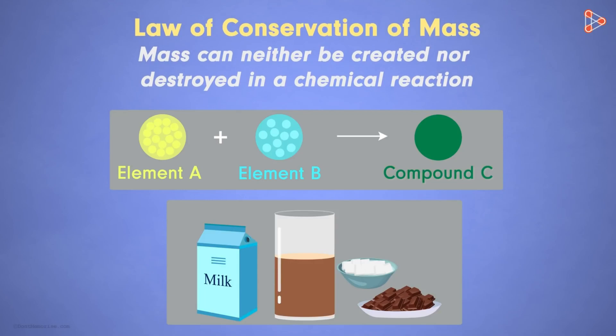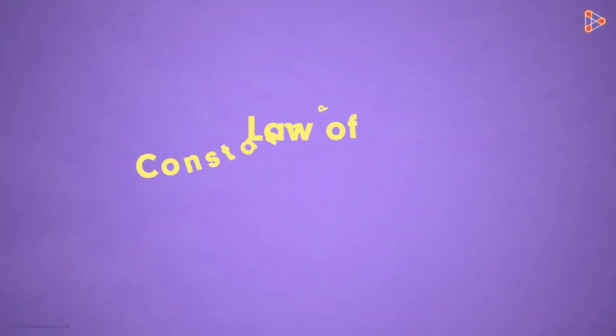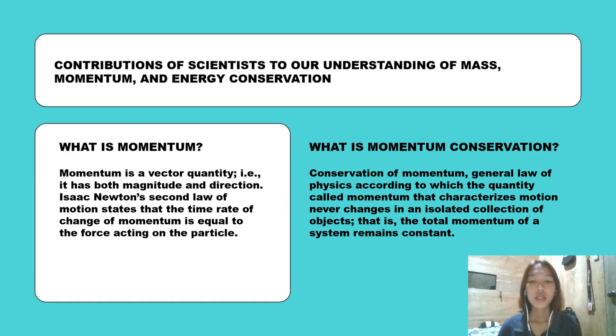Now this was the first law. Do you remember the second law? Yes, it was the law of constant proportions. Now let us know what is momentum. Momentum is a vector quantity. It has both magnitude and direction. Isaac Newton's second law of motion states that the time rate of change of momentum is equal to the force acting on the particle.